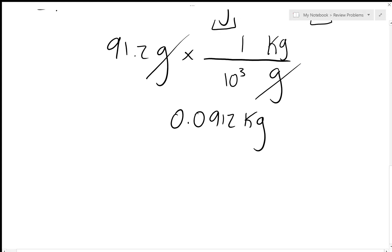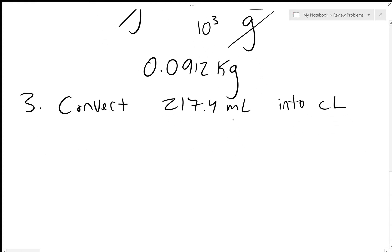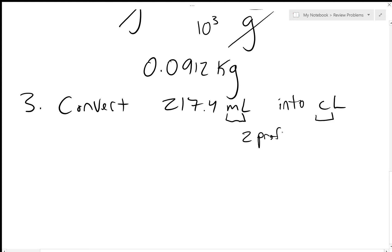Number three: convert 217.4 milliliters into centiliters. I notice that as opposed to the other problems, I have two prefixes here — milli and centi. I can convert between them because they both use liters, even though they're not equivalent amounts. Because I have two prefixes, it's going to be at least a two-step conversion.